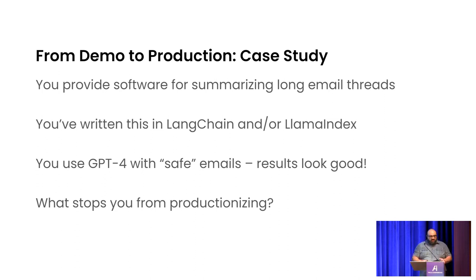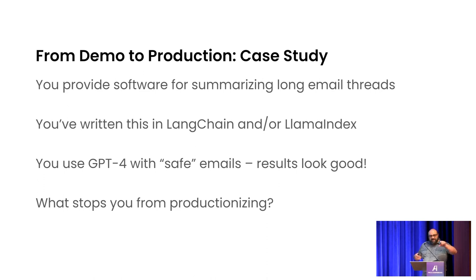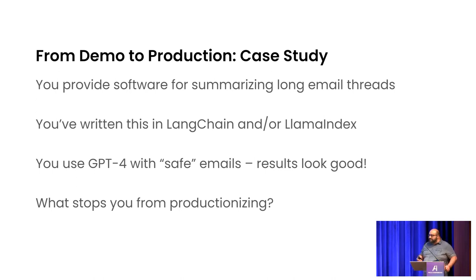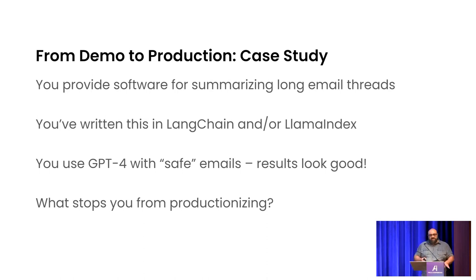Imagine you're a company that builds software for enterprises to summarize emails — instead of reading through a thread with 20 emails, it gives you a little summary: Bob said this, Jane said this, whatever else. You've tested it, it works beautifully. You've built it in Langchain or Llama Index, used GPT-4 with it. It works great. So what are the barriers to productionizing this wonderful email summarization app?